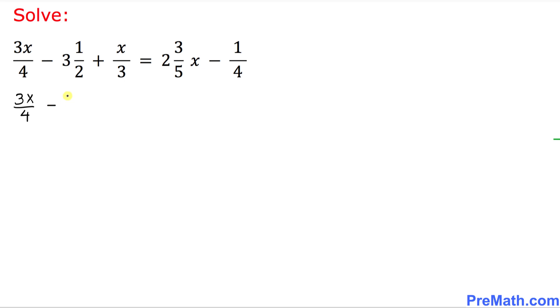So this becomes negative 7 over 2 plus x over 3 stays the same equals to on the right hand side...